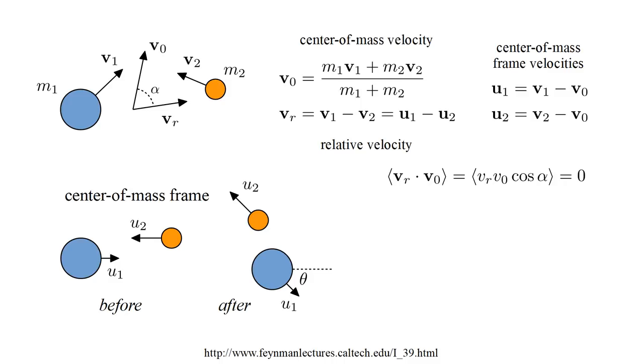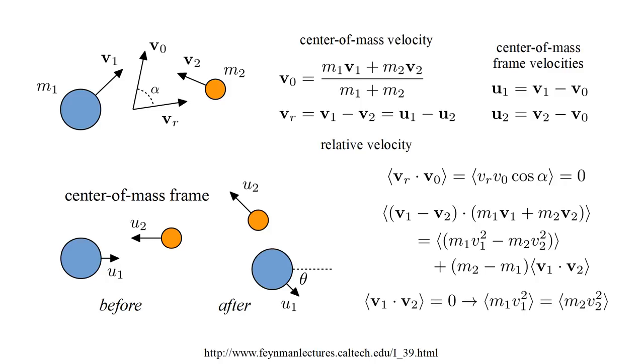Over many collisions, we expect that the angle alpha between the relative velocity V-R and the center of mass velocity V-0 will take on all possible values. So averaged over all collisions, the so-called inner product between these two velocities will be zero. Writing this out in terms of V-1 and V-2, we get two terms. The first is the average of twice the difference in kinetic energy. The second is the difference in masses times the average inner product of V-1 and V-2. Over many collisions, we also expect that the angle between these two velocities will take on all possible values. So this second term will vanish. But then the first term must vanish, which requires, on average, the two particles to have equal kinetic energy.